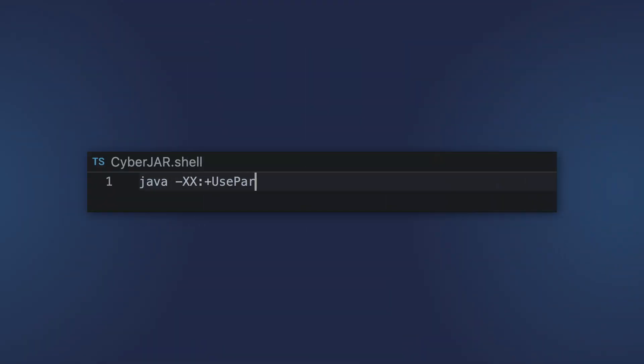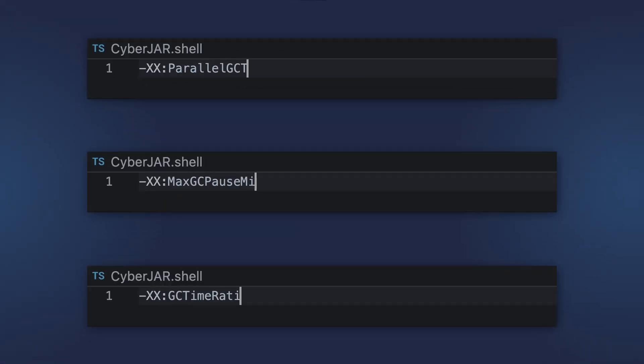ParallelGC is also called a throughput collector. It also freezes all application threads but works in multiple threads to perform the collection. By default, it works in multiple threads when performing the collection of both the young generation and the old generation. You can set the number of worker threads, pause times, and the time the application spends on collection.